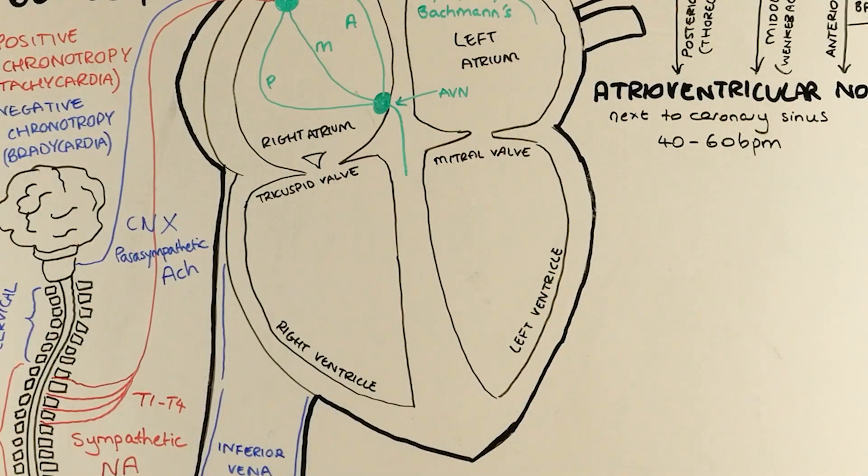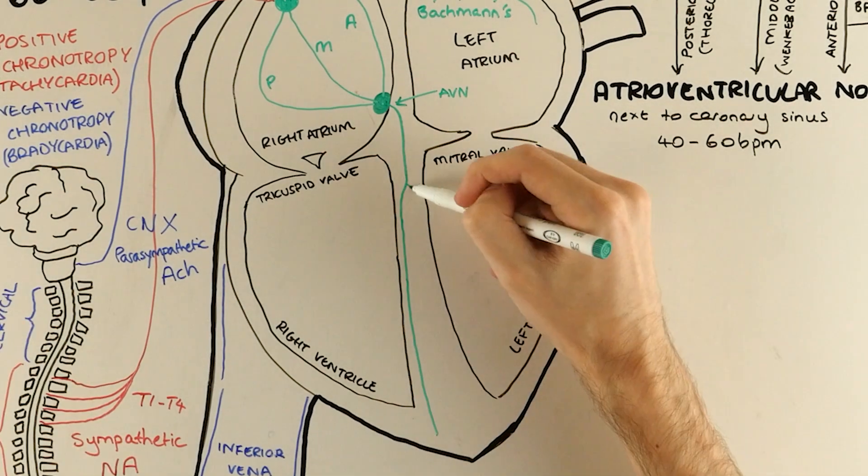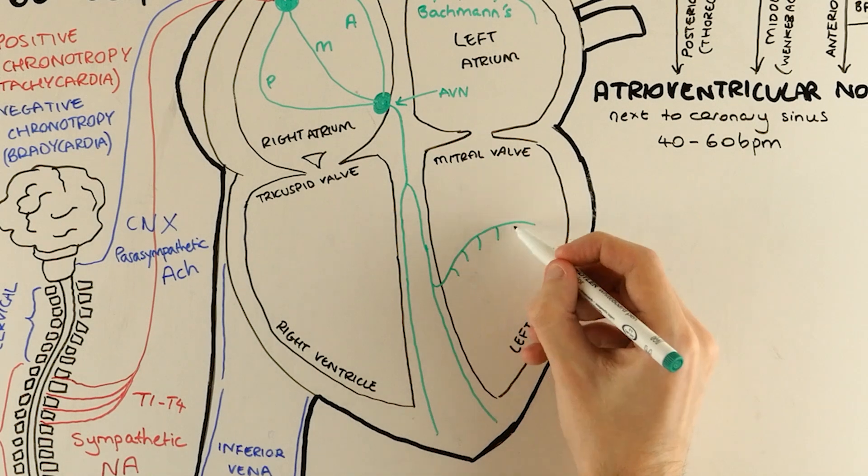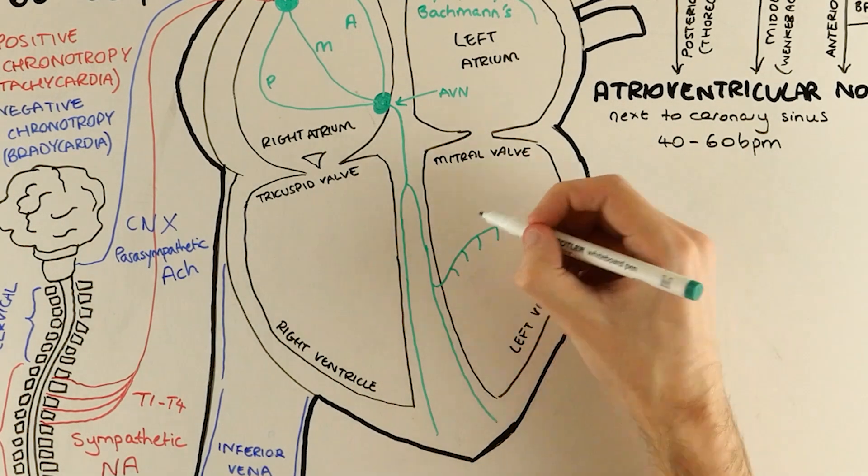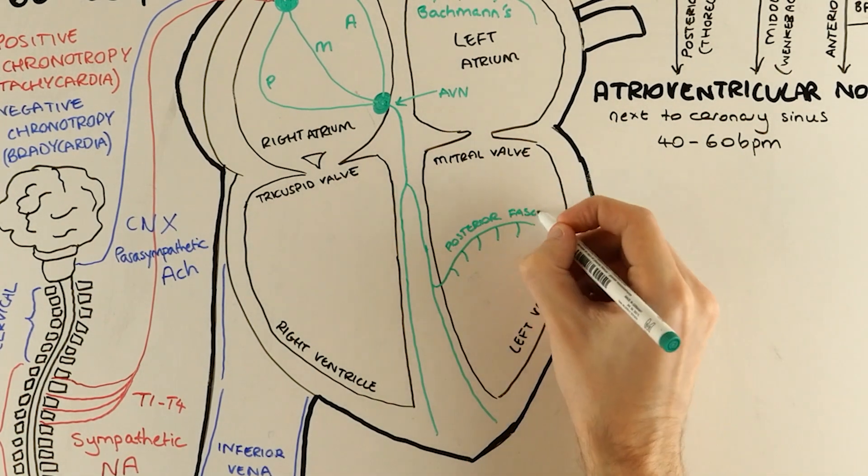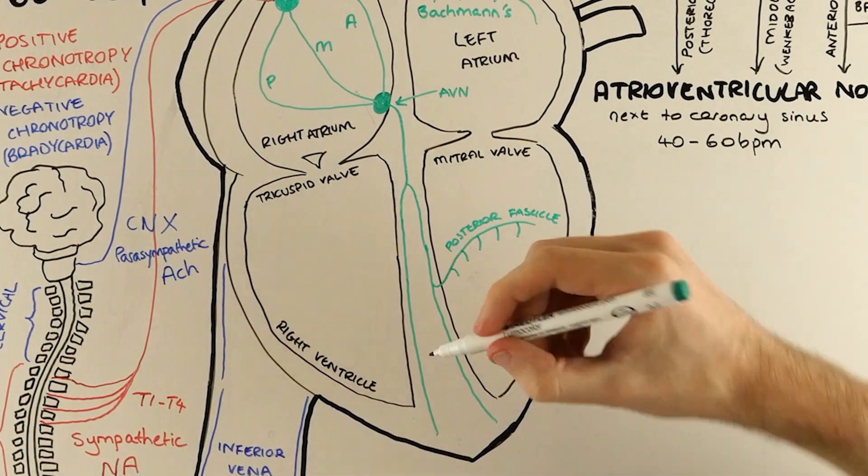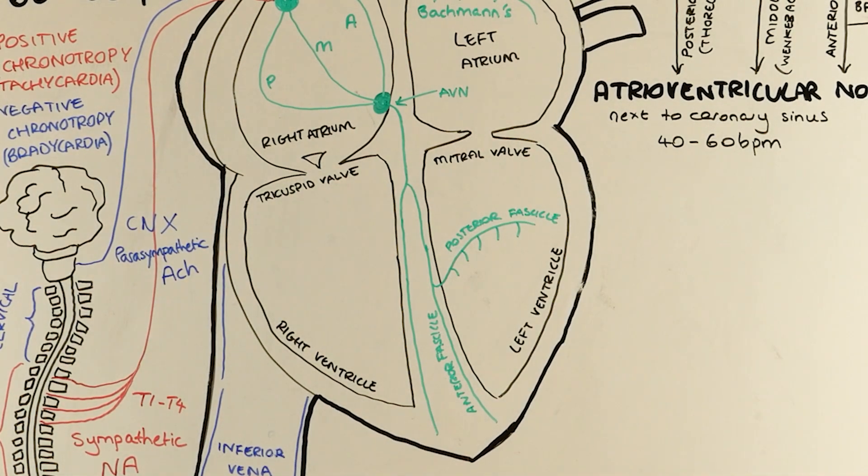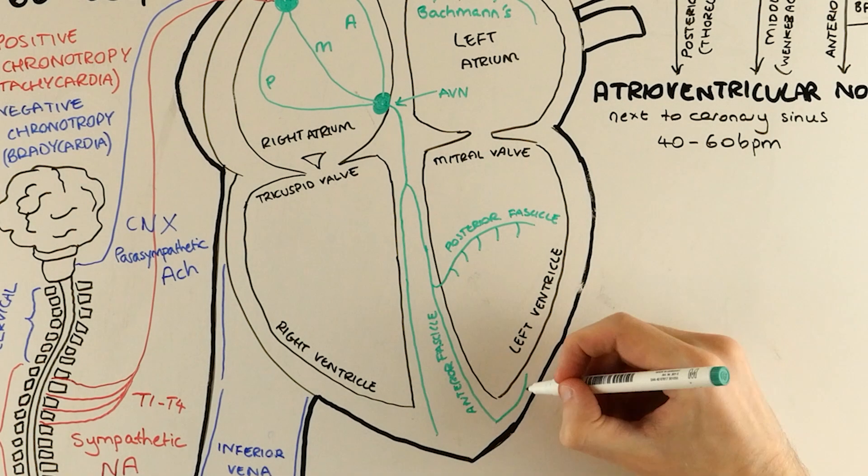So now from the atrioventricular node, we need to head into the ventricles which we do via the bundle of His. This runs down the interventricular septum, splitting into the left and right bundle branches. The left bundle further subdivides into the anterior and posterior fascicles, which track down to the apex of the heart.